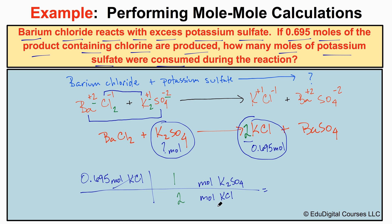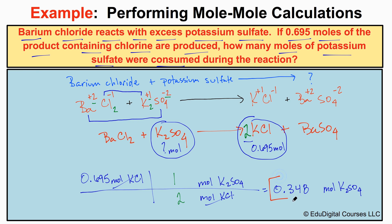Moles of potassium chloride cancel, leaving us with moles of K₂SO₄. We put this in our calculator, working left to right: 0.695 divided by 2, which gives us 0.348 moles of potassium sulfate. So if 0.695 moles of potassium chloride are produced, then 0.348 moles of potassium sulfate are consumed. That's how we perform mole-mole stoichiometry.